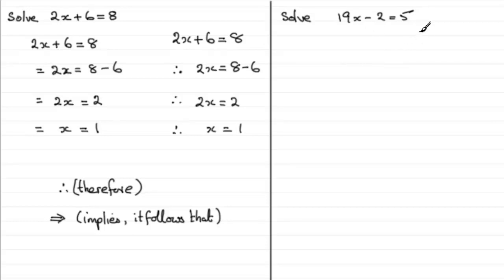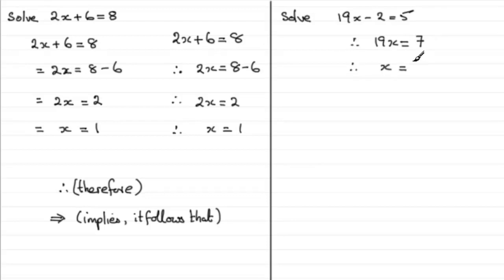Welcome back if you had a go — let's see how you got on. The first thing I'd want to do is add 2 to both sides. Therefore I'm going to get 19x equals 5 add 2, or you could just write 7. Now I'm going to divide both sides by 19, and so therefore I get x equals 7 divided by 19. If this was me, I would leave it at this answer — 7 divided by 19 is seven-nineteenths. This is the exact value, and this to me is a good answer.